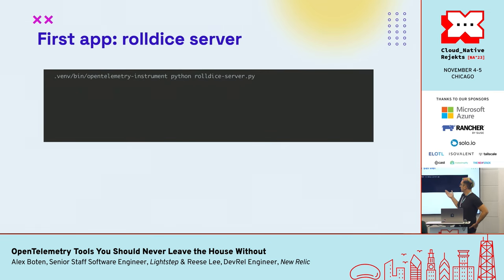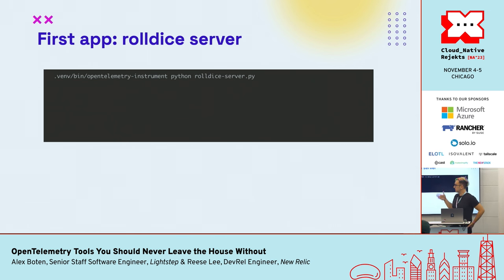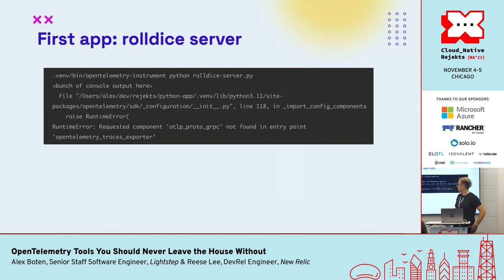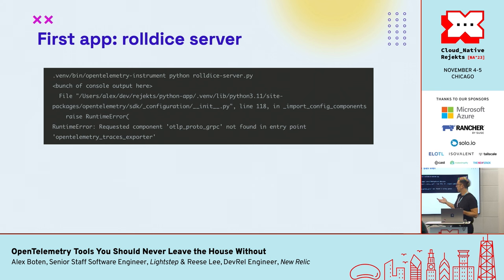I thought I would be good to go using the opentelemetry-instrument command that wraps the execution of the Python script. Unfortunately, I was not expecting to see an error message. I wondered if there was something I could do to debug it further, since I was completely unfamiliar with gRPC, proto, OTLP — whatever this was. I remembered there's an environment variable called OTEL_LOG_LEVEL, defined in the OpenTelemetry spec, which defines all features across all implementations.